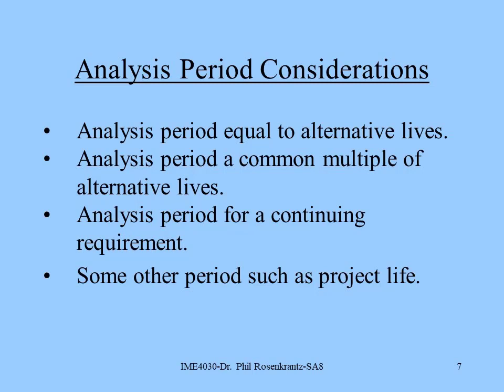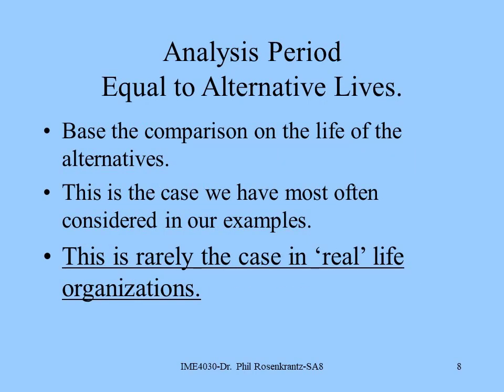Let's go to slide number seven and talk about analysis period considerations. The analysis period can be equal to the alternative lives, a common multiple of alternative lives, a continuing period, or some other period such as project life. On slide number eight: when the analysis period equals the alternative lives, we compare the two alternatives directly — that's basically what we did in our first example. This is the case most often used in the textbook, though it's rarely the real case in practice.